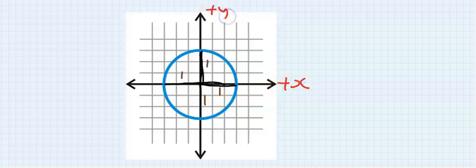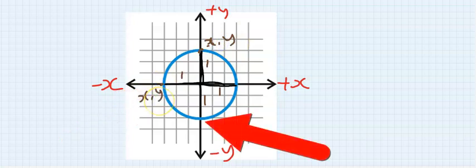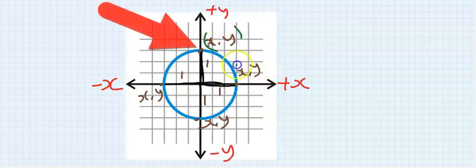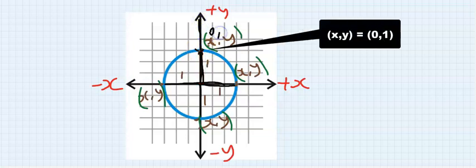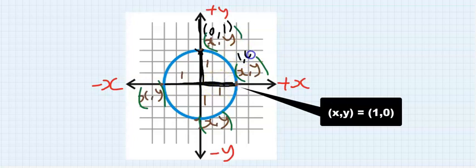This is the plus y-axis, here is the minus x-axis, here is the minus y-axis. This point is (x, y). At the top edge you also have (x, y), at the left edge you also have (x, y), and at the bottom edge you also have (x, y). Considering the top point, the x-coordinate does not exist because the arrow is pointing only to y, and the length of this y is one.